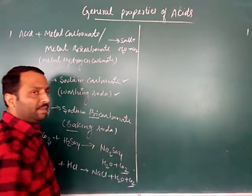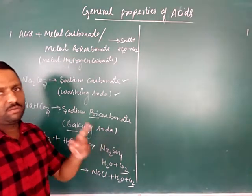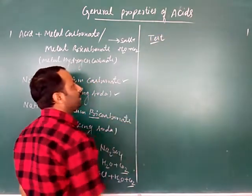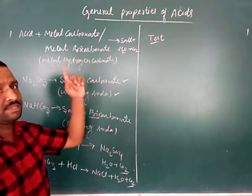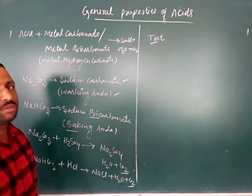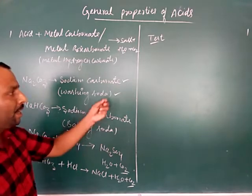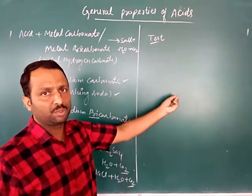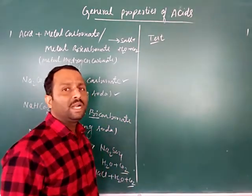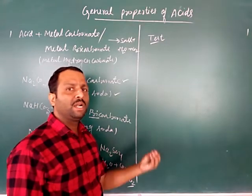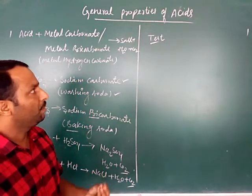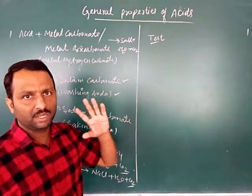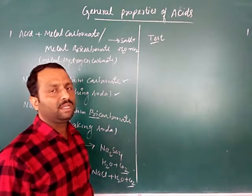In board exams, one question out of two is definitely asked to test gases. To test hydrogen gas, a burning splint is used — when brought near the gas, it gets extinguished with a pop sound, which tells us hydrogen gas was released. That was the test for hydrogen. The second test is for carbon dioxide.